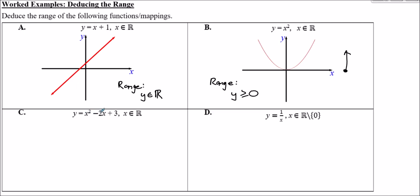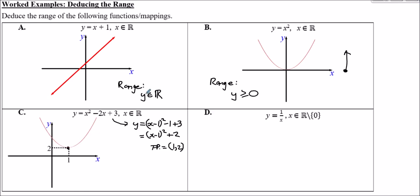For y = x² − 2x + 3, where x is any real number, we complete the square: y = (x − 1)² + 2. The turning point is at (1, 2), so y is always at least 2. Therefore the range is y ≥ 2.